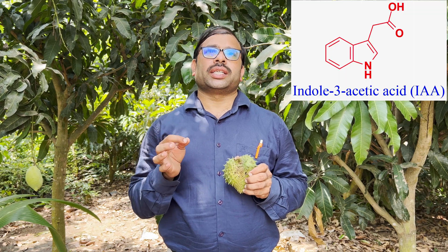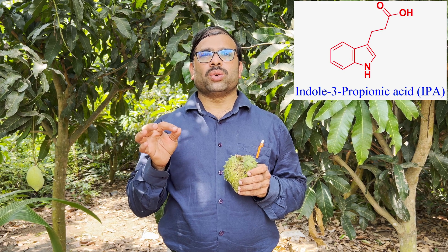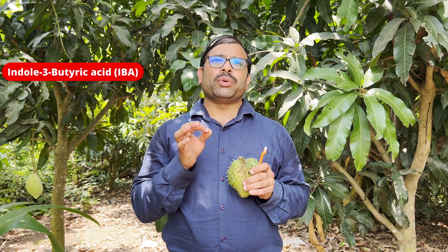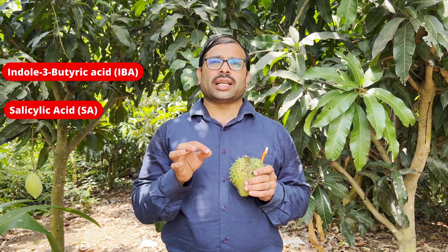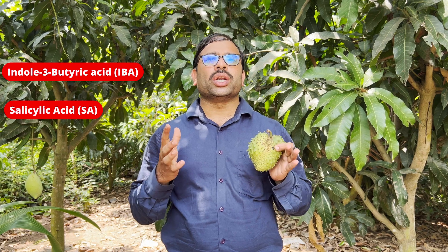How many types of rooting hormones are there? There are mainly two types. The first type is natural rooting hormones or auxins, which are Indole-3-Acetic Acid known as IAA, Indole-3-Propionic Acid known as IPA, Indole-3-Butyric Acid known as IBA, Phenylacetic Acid known as PAA, and Salicylic Acid known as SA. Among these, Indole-3-Butyric Acid (IBA) and Salicylic Acid are widely used natural rooting hormones.